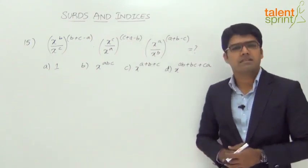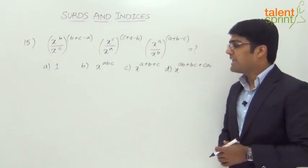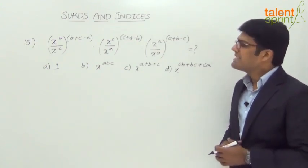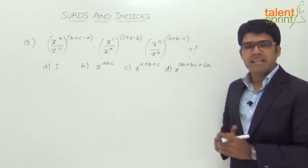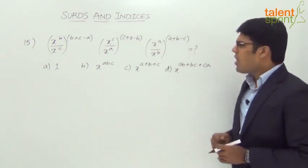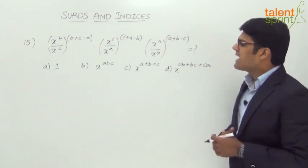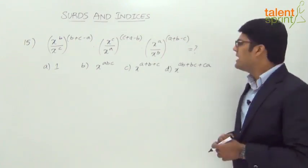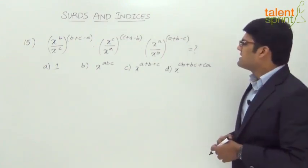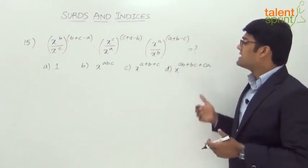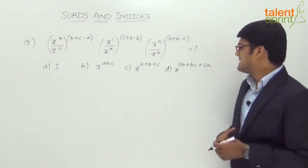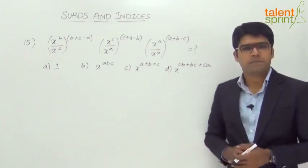We have four answer options. Option A is 1. Option B is x^(abc). Option C is x^(a+b+c). And option D is x^(ab + bc + ca).